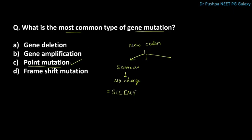The new codon may code for a stop codon, causing premature termination of protein — this is called nonsense mutation. Another possibility is that the new codon codes for a different amino acid, resulting in production of an altered protein — this is called missense mutation.